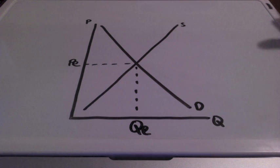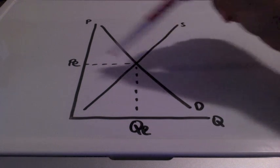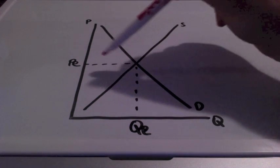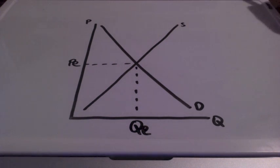We are going to take a look at a couple examples of what we call disequilibrium. Disequilibrium basically is any point that doesn't represent the balance or equal point of what consumers are willing and able to buy and what producers are willing and able to sell.